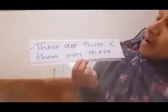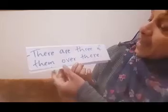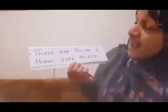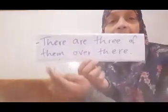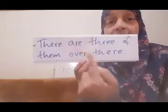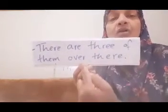The first example sentence is: 'There are three of them over there.' There are three of them over there.